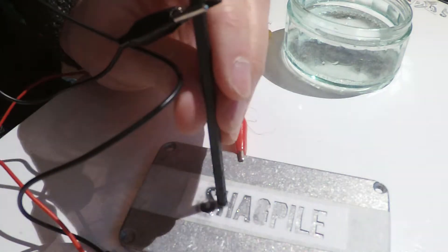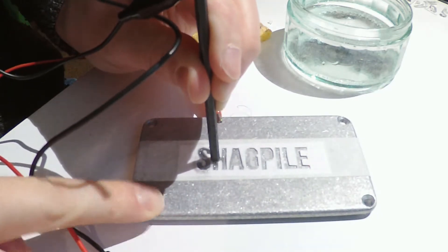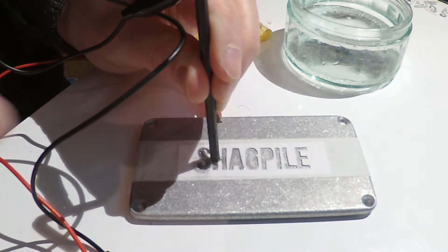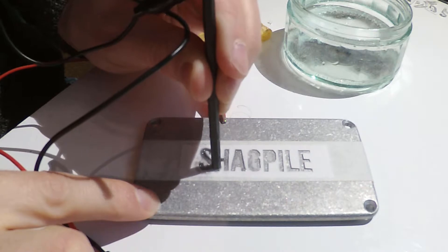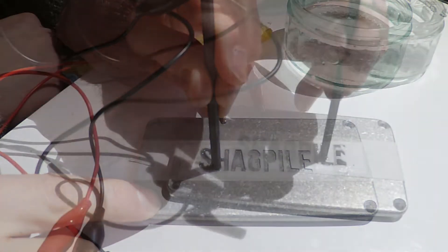So this particular design is from one of my Shagpile pedals, which is an envelope controlled double tracking quasi-chorus pedal available on my website. I don't normally do etching on them, but this was a special order.